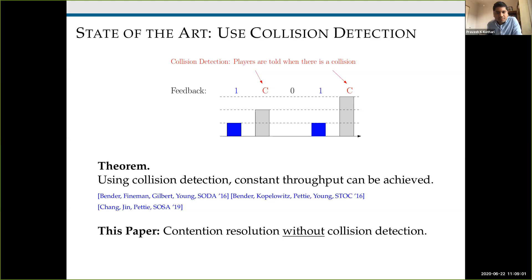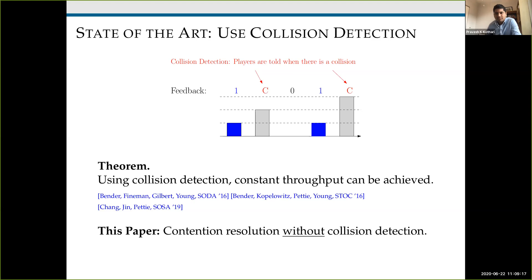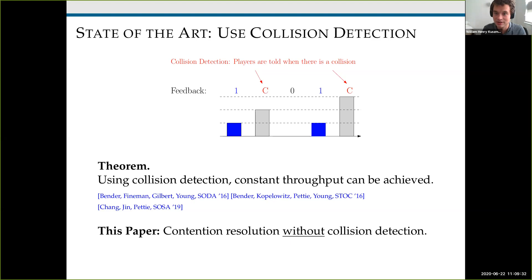The next question is from Joseph Downs: without collision detection, how do the players know when they are done? The players still receive binary feedback, which means they still know at each step whether there was a successful broadcast. If you attempted to broadcast on a step and find out there was a successful broadcast, you can conclude that you must have been the successful broadcast. That's one way players can know when it's time to leave the system.